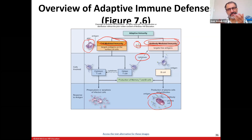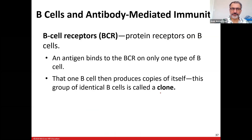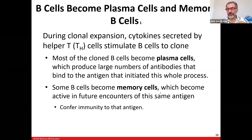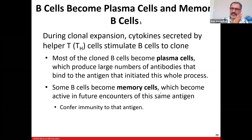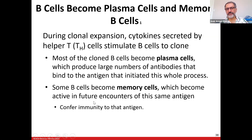B cells make antibodies and clone themselves repeatedly — they also make memory cells. Next time you're infected with the same pathogen, they bypass many steps and go right into making antibodies to protect you. Some B cells become memory cells which become active in future encounters with the same pathogen.